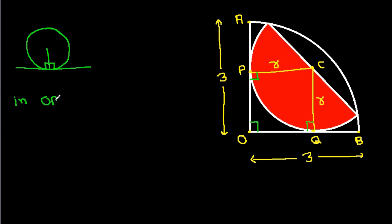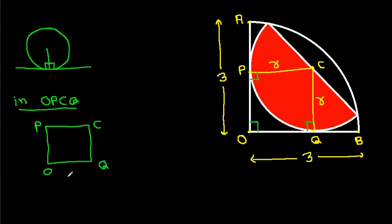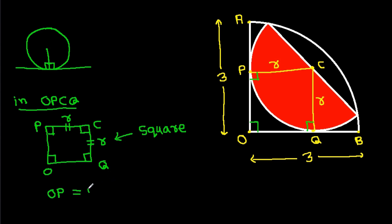So in quadrilateral OPCQ, three angles are 90 degrees, so the fourth angle will also be 90 degrees. And since CP equals CQ equals R, that means OPCQ is a square, and OP equals PC equals CQ equals QO equals R.